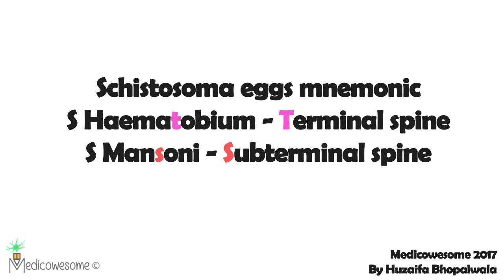I want to share something interesting about Trematodes fluke diseases. There's Schistosoma mansoni, Schistosoma japonicum, and Schistosoma hematobium. The high-yielding point about mansoni and hematobium is how do you differentiate them on the basis of their ova.